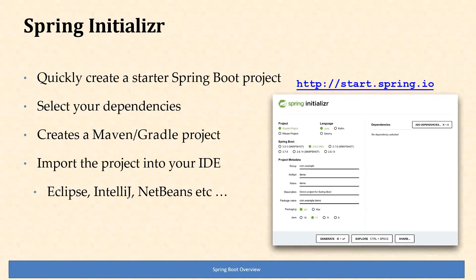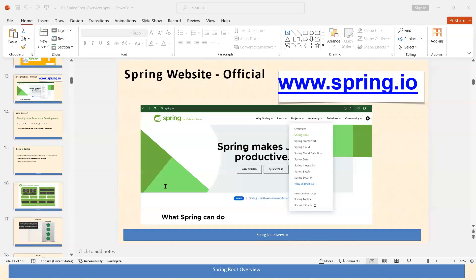Spring Boot comes with Spring Initializer, which is going to be our next video. What does Spring Initializer do? It quickly creates a starter Spring Boot project for you. You access it at start.spring.io. Once you go there, you select your dependencies and can create a Maven or Gradle project. You then import the generated project into your IDE — whether Eclipse, IntelliJ, NetBeans, or whatever you like.